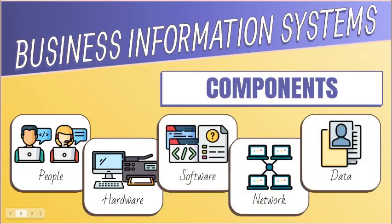People resources include the users and developers of an information system and those who help maintain and operate the system. Hardware resources include physical equipment used for input, output, and processing. Software resources are the programs used to control and coordinate the hardware components, and are classified into system software, application software, and procedures.